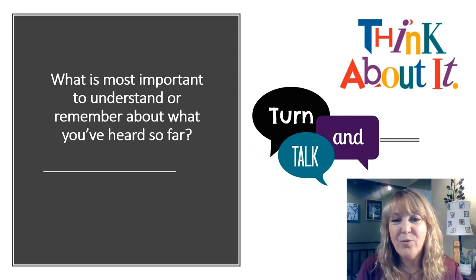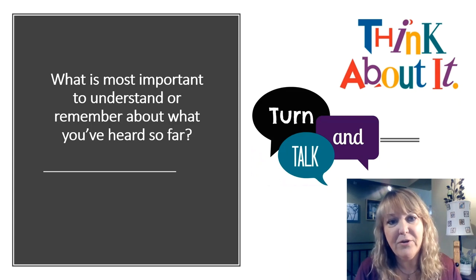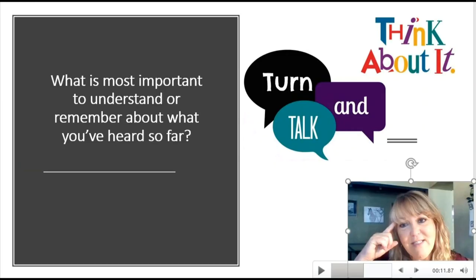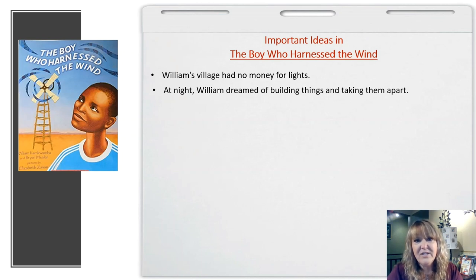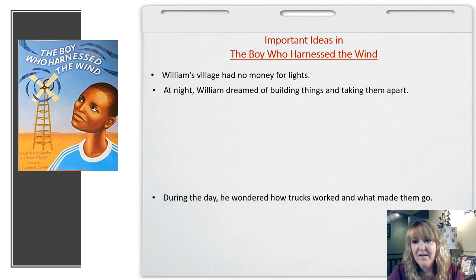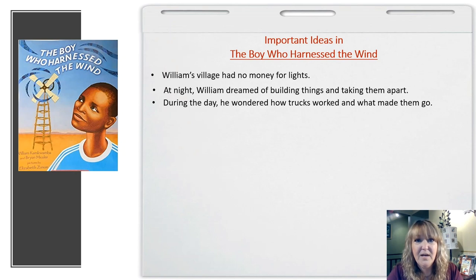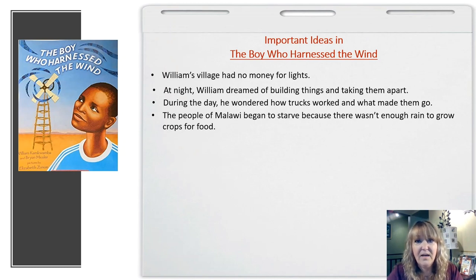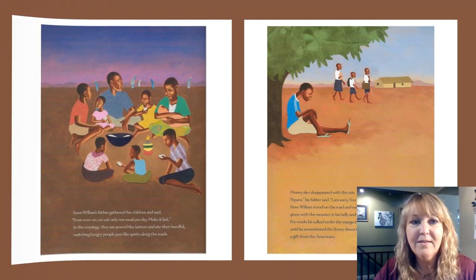Let's pause here. We're going to think about the question again, and you'll share with your turn and talk partner: what is most important to understand or remember about what we've heard so far in this section? In this section, we learned that during the daytime, William spent a lot of time wondering and daydreaming about how trucks worked, what made them go — giving us insights about who he is as a character. And then there was the part that got more serious: we learned that the people of Malawi began to starve because there wasn't enough rain to keep their crops growing, and they began to run out of food. Let's continue with the story.